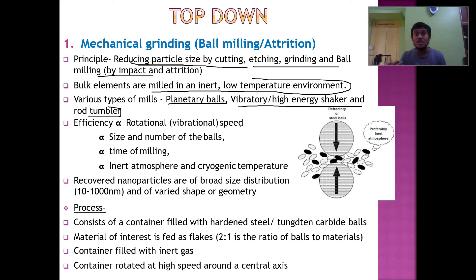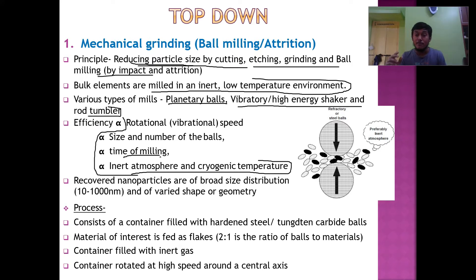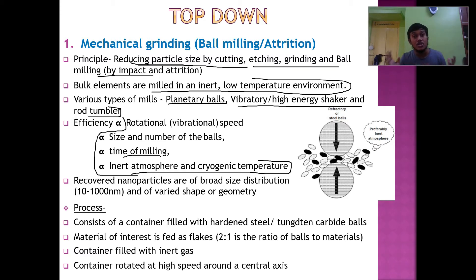The efficiency of ball milling is directly proportional to the rotational speed — the faster the blades around the motor revolve, the greater the efficiency. It is also directly proportional to the size and number of balls, time of milling, inert atmosphere, and cryogenic temperature. The faster the blades revolve, the more quickly larger particles are reduced to their desired smaller size.